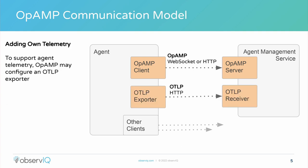The protocol layers on an additional component: own telemetry for the agent. Folks involved in OpenTelemetry were resistant to reinventing OTLP and definitions for telemetry signals being sent to another service. So the way this operates is OpAMP will configure an OTLP exporter in the agent, and that will then be sent to the OTLP receiver in the agent management service. The other clients box represents wherever the agent would typically be sending data — whatever your destination is.